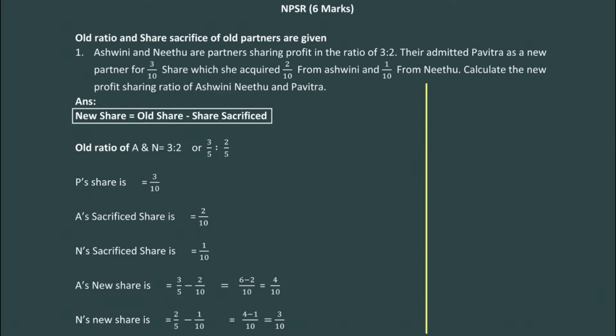Here the question says: Ashwini and Nitu are partners sharing profit in the ratio of 3:2. They admit Pavitra as a new partner for a 3/10 share. Pavitra acquires 2/10 from Ashwini and 1/10 from Nitu.